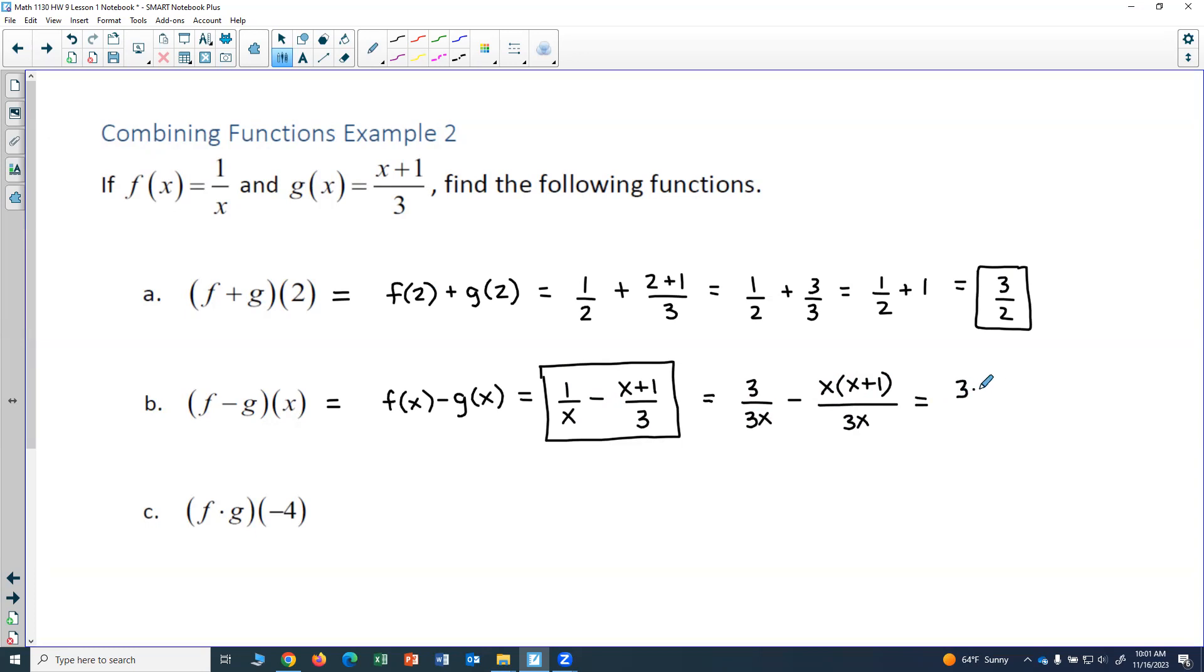So this would be 3 minus, and if I distribute that x, I would get 3 minus x squared plus x all over 3x. And so as a final answer, I could write this as 3 minus x squared minus x, distributing that negative into the parentheses. So 3 minus x squared minus x all over 3x. This would also be a valid answer. And in some cases, it might actually help you to combine your two fractions. But you are also welcome to just enter this first answer into your homework system.